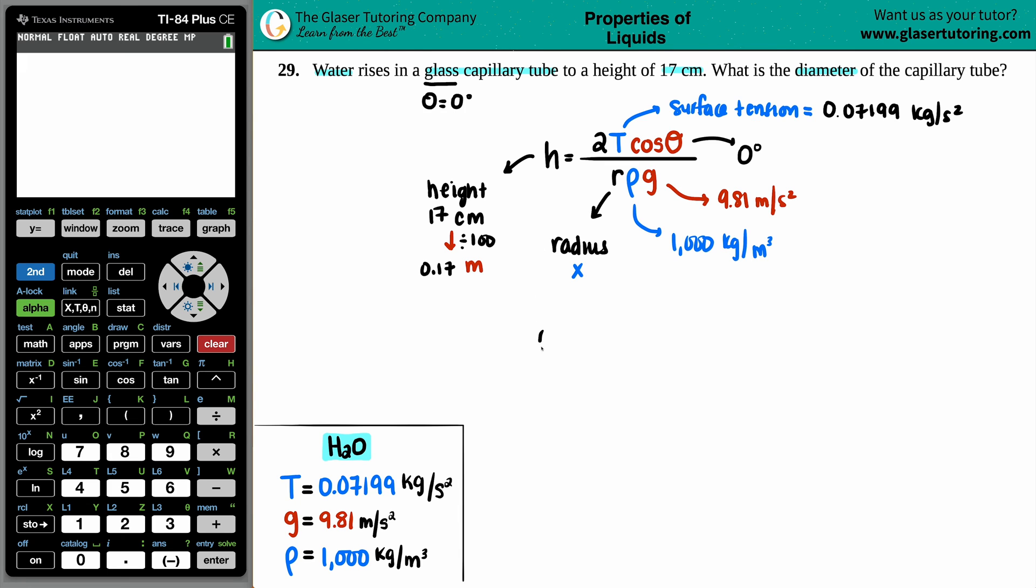So I have 0.17 equals two times the surface tension cosine of an angle divided by r, the density, times acceleration due to gravity. So we have two times the surface tension, which is going to be 0.07199. The cosine is going to be zero. The r value is what we're searching for, so that's x. The density is the 1000, and then the acceleration due to gravity is the 9.81.